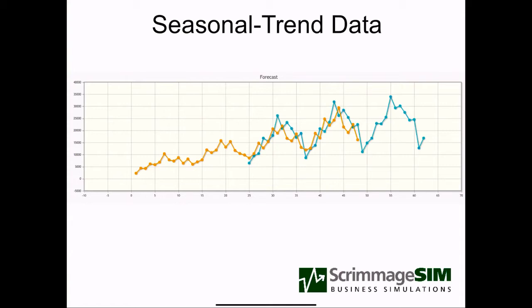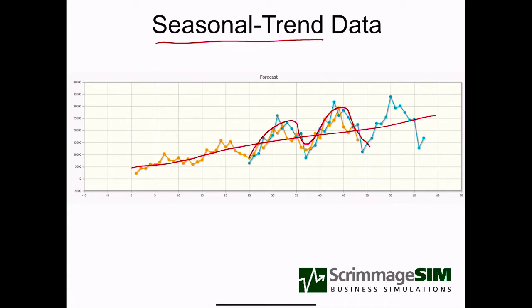Then we looked at the seasonal model where sales are level except that they're adjusted by the seasons — we have a product like suntan lotion or skis that are affected by the weather. Now we're going to look at seasonal trend models with seasonal trend data. As an example, we have increasing sales, so there's certainly a trend in the data, and we also have seasonal variation over the 12-month cycle of seasons. We're going to look at two ways of forecasting this, and they're really combinations of models we've already looked at.